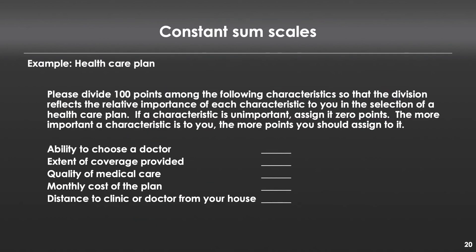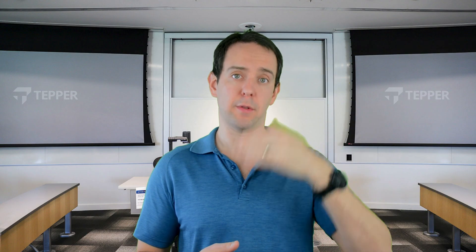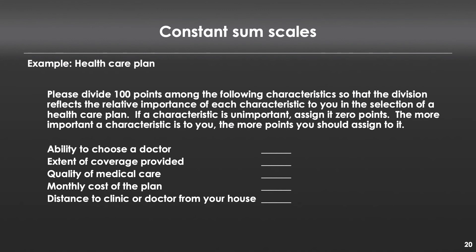Another classic example of a scale is a constant sum scale. You might see something like: here are 100 points — allocate them to indicate how important they are in determining what health plan you use when selecting your health insurance provider. You have things like ability to choose a doctor, extent of coverage provided, and so on. What people do is take 100 points and divide them amongst these options. In principle, this is a beautiful scale — it allows you to do what an ordinal scale allows, saying which is more important than which, but it also lets you say how much more something is important. For example, ability to choose a doctor might be 50, coverage 30, quality of medical care 20.